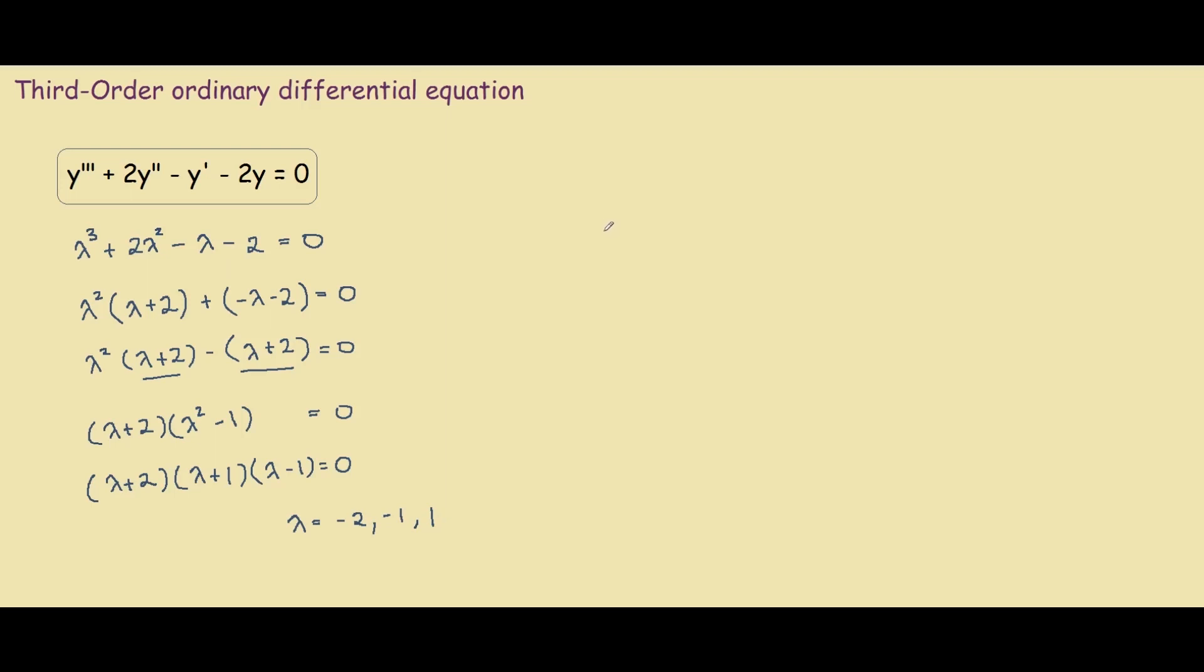So now that we've found lambda, we can find our general solution. So y of x equals to c1 e to negative 2x plus c2 e to negative x plus c3 e to the x.